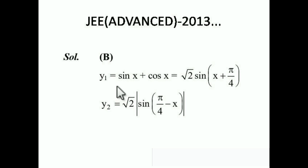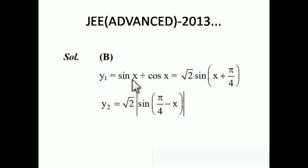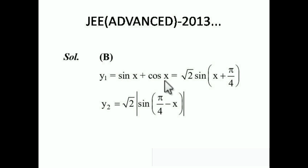The first curve is y₁ = sin x + cos x. I multiply and divide by √2, giving √2 · (1/√2 · sin x + 1/√2 · cos x). Since 1/√2 = cos(π/4) = sin(π/4), this becomes √2 · (sin x · cos(π/4) + cos x · sin(π/4)), which equals √2 · sin(x + π/4).